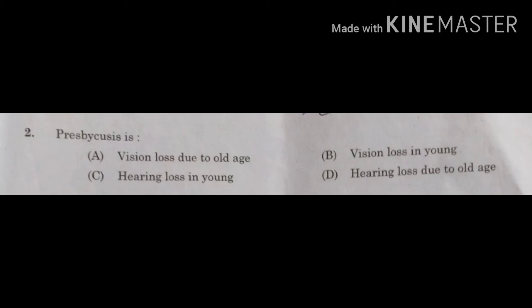The second question is about presbycusis. Presbycusis is a condition where, as a person gets older, you see hearing impairment — a loss of hearing ability. Analyzing the four options, the correct answer is the fourth option: hearing loss due to age. As a person gets older, hearing abilities gradually decline, and that condition is known as presbycusis. The correct option is D.